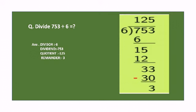Six 2s are 12 and six 3s are 18. Since 18 is more than 15, we take 12. Subtract: 15 minus 12 equals 3. Bring down 3 to get 33.